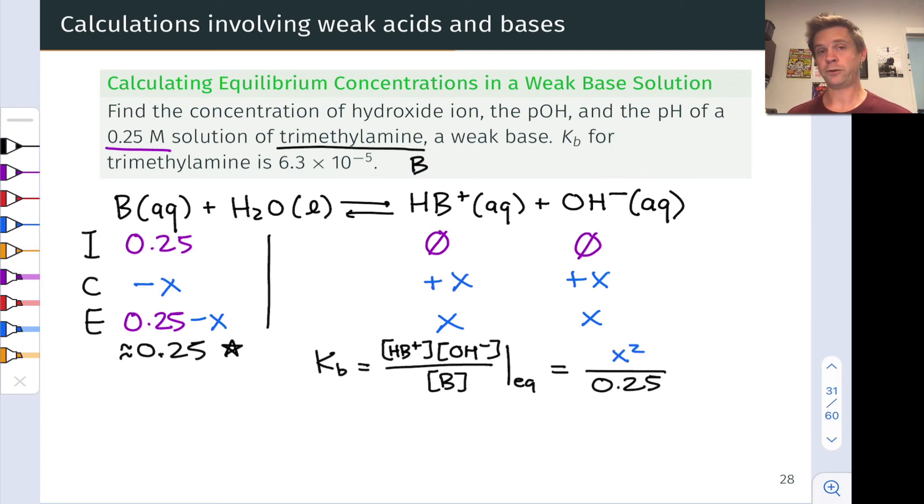This allows us to plug in 0.25 in the denominator of the equilibrium equation. We arrive at Kb equals X squared divided by 0.25, and we can plug and chug and solve for X: 4.0 times 10 to the negative 3 moles per liter.